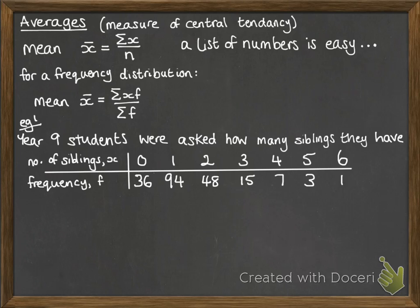Now if we want to find the average number of siblings, or the mean number of siblings, we do the sum of x times f divided by the sum of f. What that really means is we're going to find our total frequency - that's the sum of f, how many people did we ask - just add them all up, and then we do x times f.